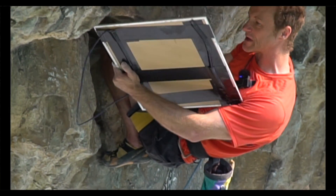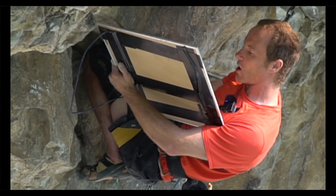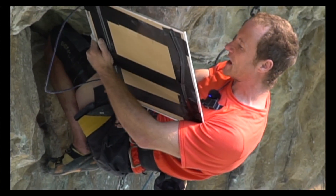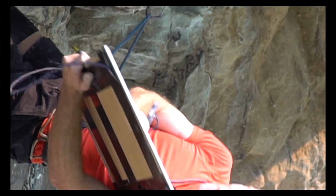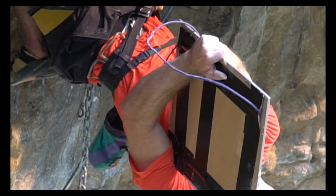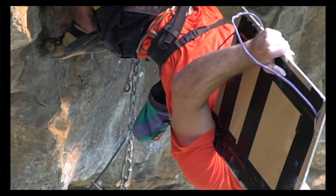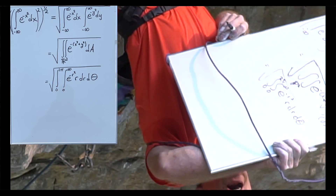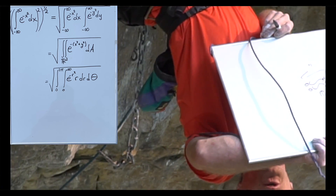So now we're going to make a change to polar coordinates. That means x squared plus y squared becomes r squared, and dA is r dr d theta. We're going as r goes from 0 to infinity and theta from 0 to 2 pi, which will capture the entire real plane in polar coordinates.